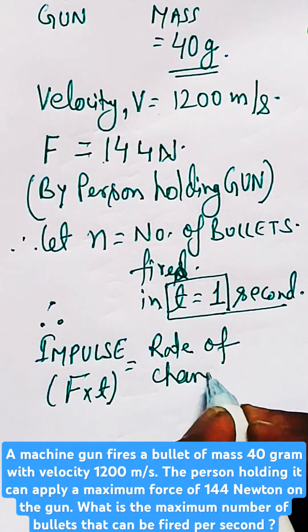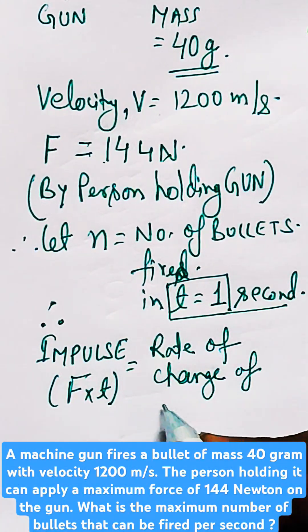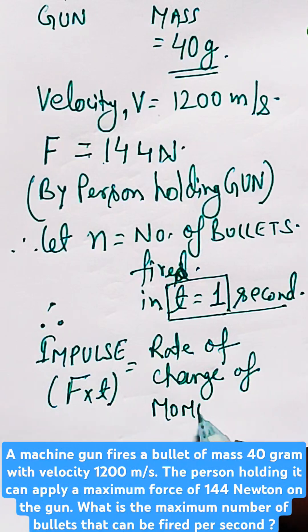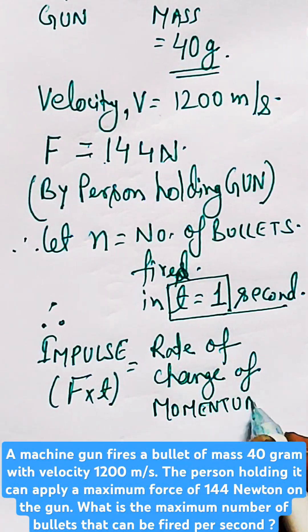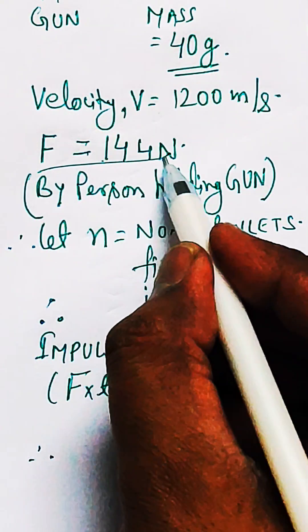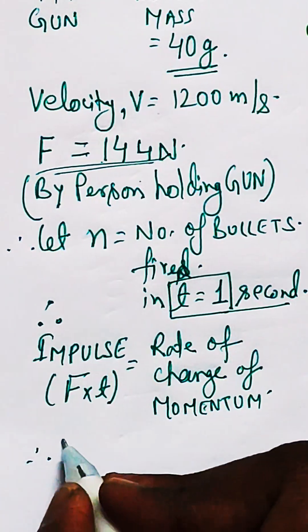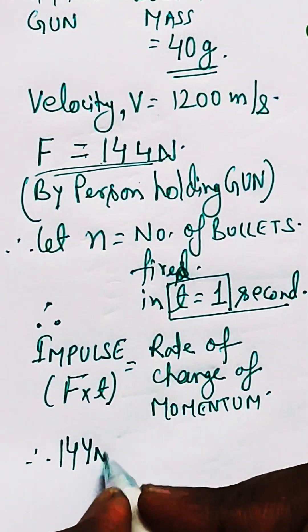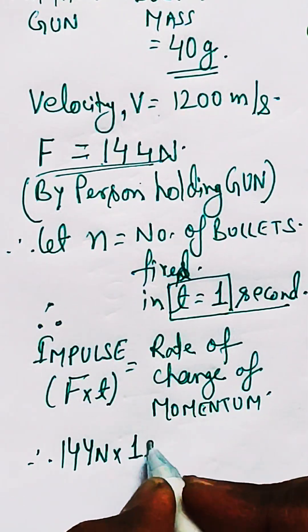The rate of change of momentum for n bullets will be n times m times V, where m is the mass of the bullet and V is the velocity of the bullet. So here, F is given to you as 144, multiplied by T equal to one second.